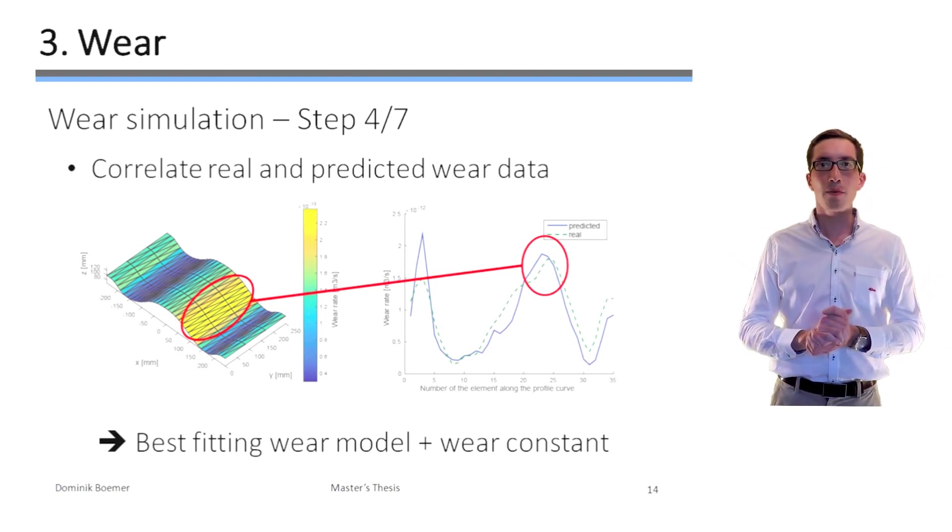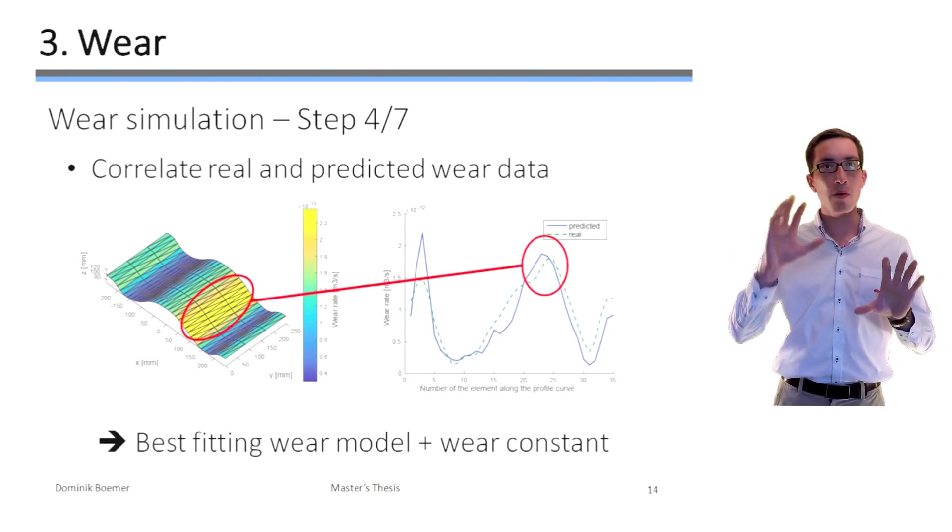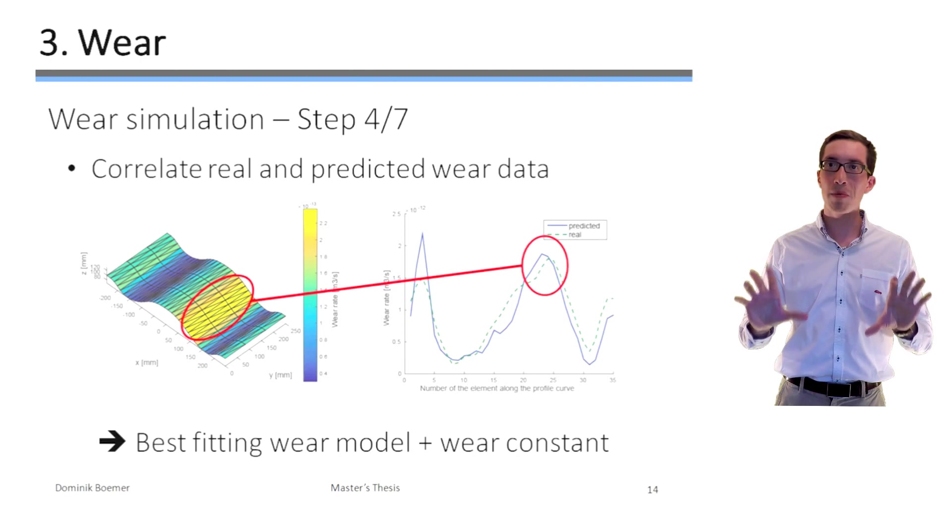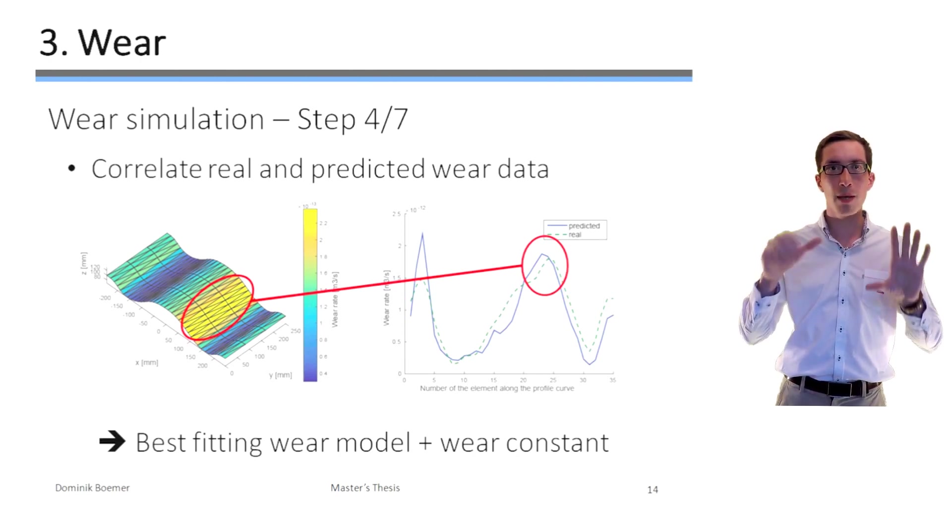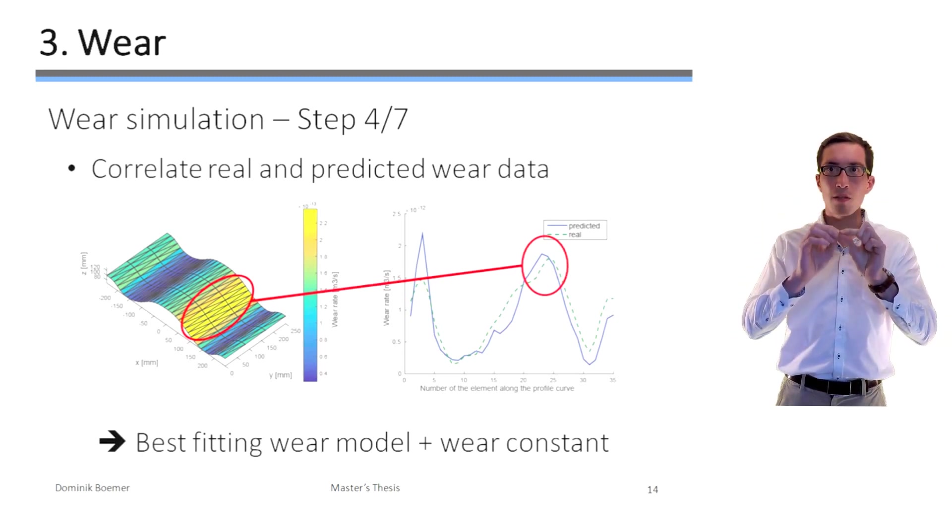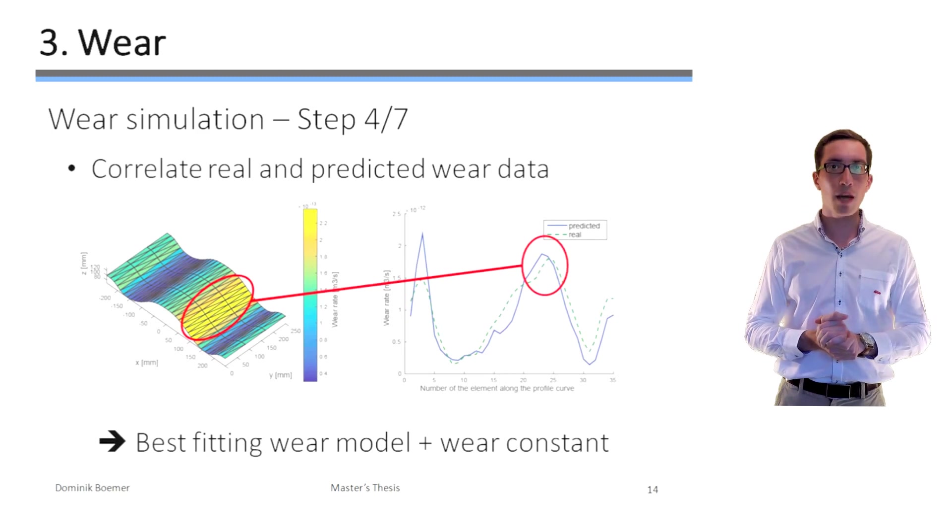So at present, we know the real wear and the predicted relative wear which we determined just two slides ago. In order to determine which of the six different wear models is the best fitting wear model, we can correlate them. So this is shown here for the tangential damping energy, one of the six different wear models represented by the blue curve.